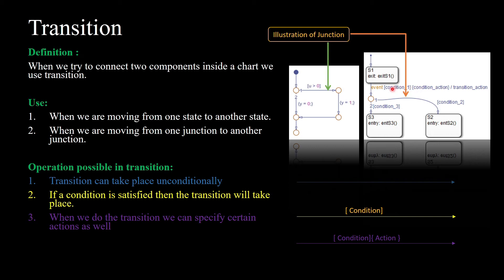When the condition is satisfied, a particular action will happen. There is also another type of transition that includes a transition action. When the condition is satisfied, the condition action takes place, and while the transition is going from one state to another, a transition action that is defined will also execute. That transition action is represented with the help of a slash. The syntax is: first represent the condition within square brackets, then represent the condition action within curly braces, then after a slash, define the transition action.